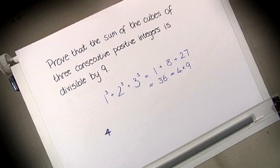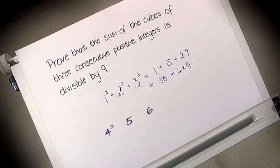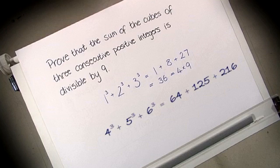Let us try another example. Let's begin with 4. And the one after that, 5. And the one after that, 6. Again, I want to cube the integers. So 4 cubed, 5 cubed and 6 cubed. And summing them as so. Adding them up, I get 405, which can be written as 45 times 9. Again, this example is divisible by 9.